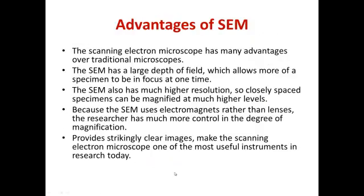The scanning electron microscope has many advantages over traditional microscopes. It has a large depth of field, which allows more of the specimen to come into focus at one time compared to other microscopes. SEM also has much higher resolution compared to the light microscope because it uses electrons as the beam of light and electromagnetic lenses to converge these beams.